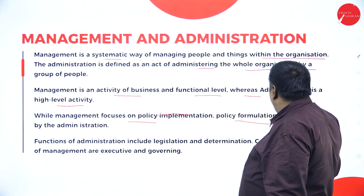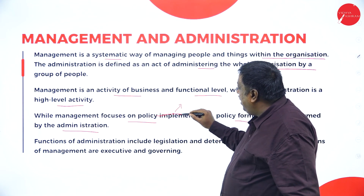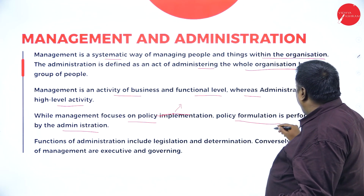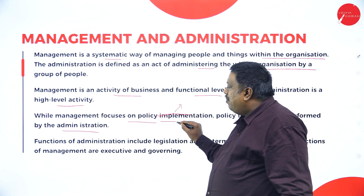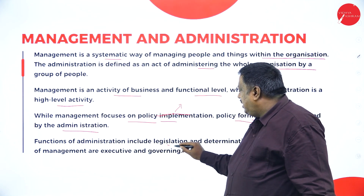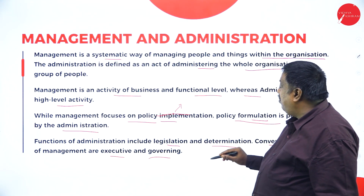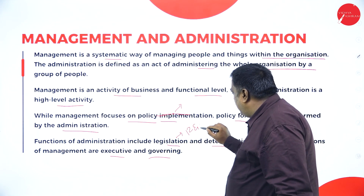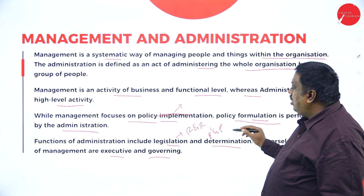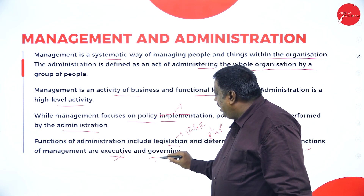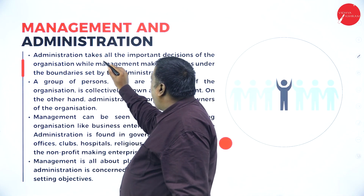Management focuses on policy implementation, while policy formulation is performed by the administration. What has to be done and how it has to be done is framed by administration and implemented by management. Functions of administration include legislation and determination, while functions of management are executive and governing — framing rules, regulations, policies, and procedures as per legal norms, and observing these in internal as well as external work activities.